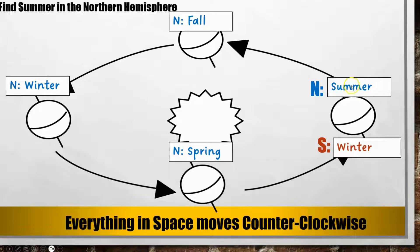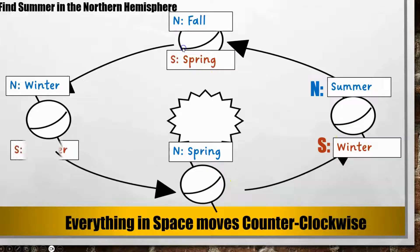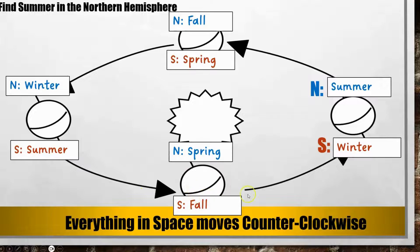Now I need to label the southern hemisphere. Opposite of summer is winter, and then I just go around and label from there — after winter we have spring, after spring we have summer, after summer we have fall. Remember: first find summer in the northern hemisphere, then remember that everything goes counterclockwise, and then label the seasons in order from there.